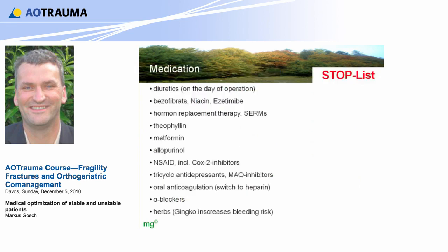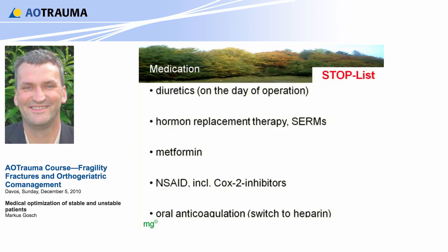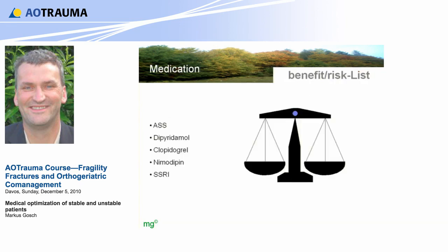There are some medications that should be stopped before the operation. We shortened the list into five groups: diuretics on the day of the operation should be stopped because of dehydration; hormone replacement therapy for the risk of thrombosis; metformin for renal failure; non-steroidal anti-inflammatory drugs for reasons of heart failure, renal failure, and ulcers; and oral anticoagulation. There is also a small list of benefit-versus-risk medications: aspirin and clopidogrel are the focus. It can sometimes be useful to accept a higher risk of bleeding, especially in patients with a coronary stent — it's a very difficult question.